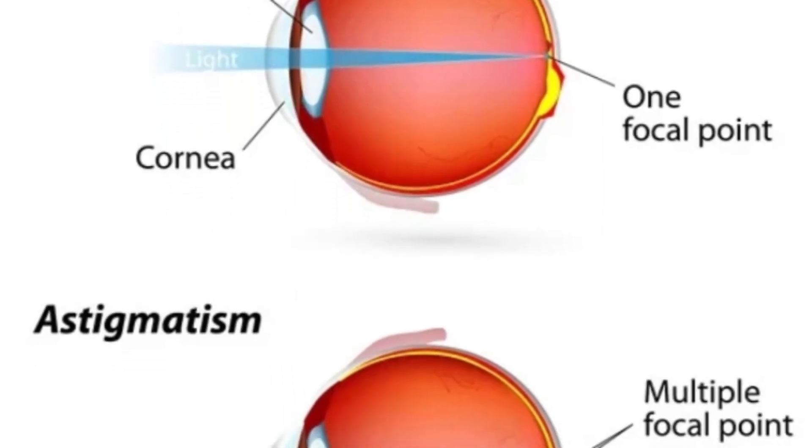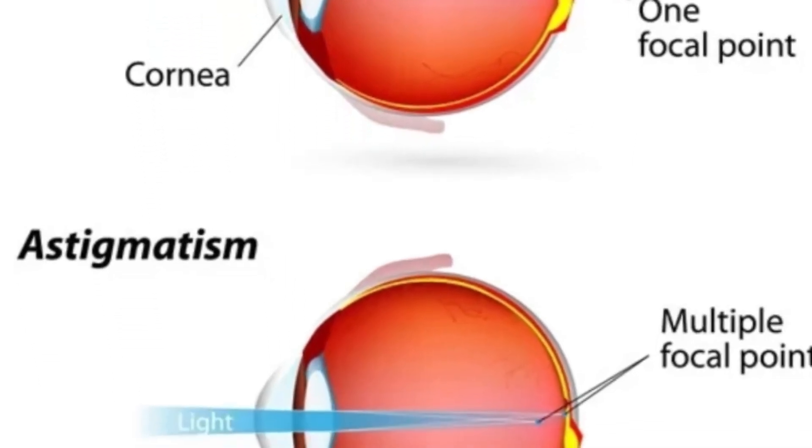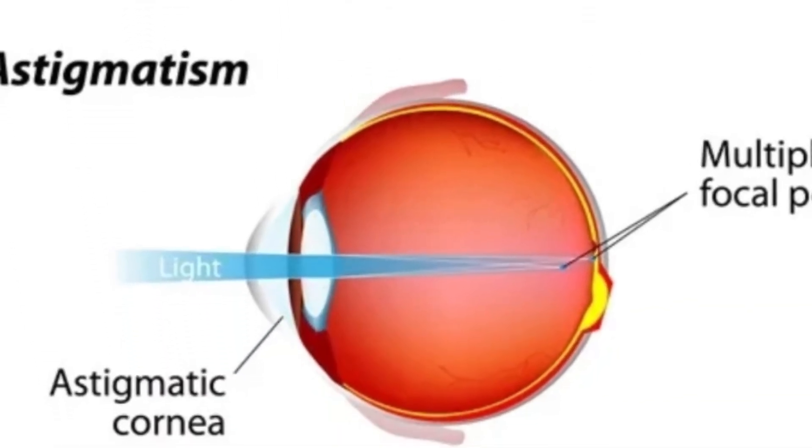If your eye has a little mix — a little plus on one axis and a little minus on another — that's called astigmatism. As you rotate the astigmatism correction on the lens, the letters distort and stretch, showing the effect of one axis being more positive and another more negative.